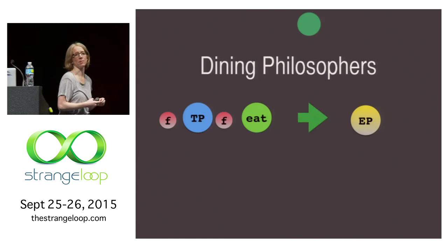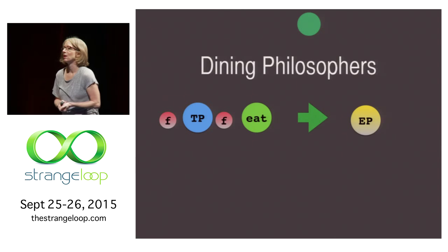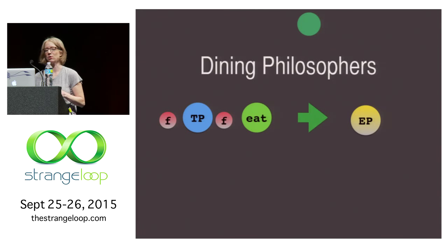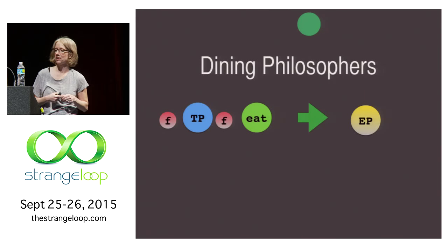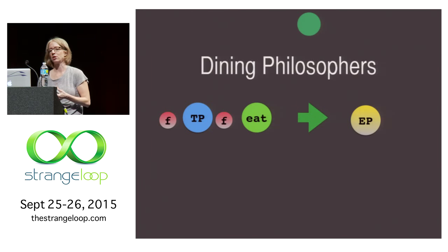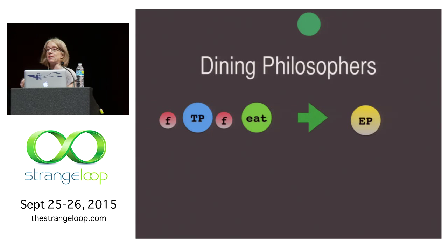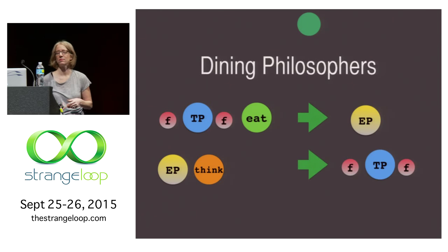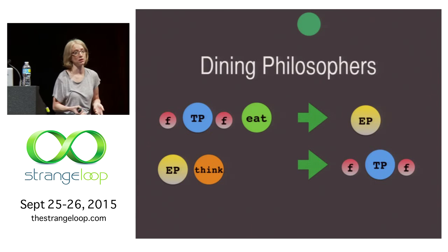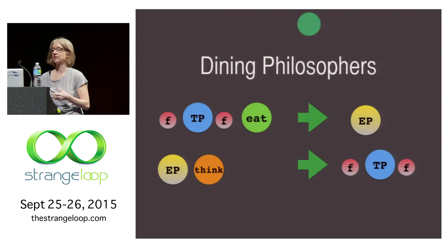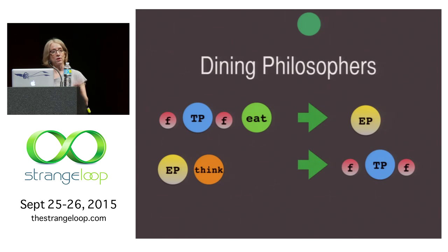How do we model this in chemical programming? Well, with molecules, of course. The F there is a fork, it's a fork molecule, and the TP stands for a thinking philosopher, and the E is an E molecule. So that's saying if a thinking philosopher has two forks available to them and it runs in, it has a reaction with an eating molecule, then it turns into an EP, which is an eating philosopher molecule. Likewise, if an eating philosopher molecule runs into a think molecule, it will turn into and react a thinking philosopher with two forks next to it.